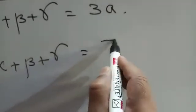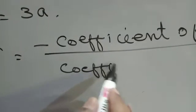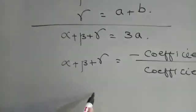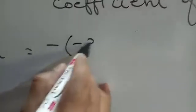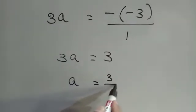The sum of the zeros of a polynomial equals minus the coefficient of x² divided by the coefficient of x³. Substituting: 3a = -(-3)/1 = 3. Therefore a = 3/3 = 1. We have found the value of a.